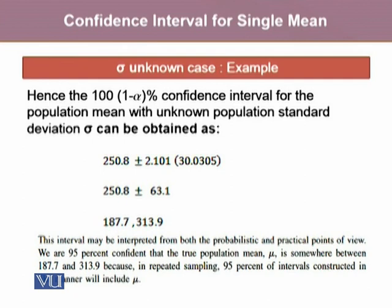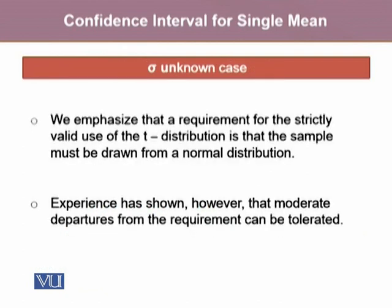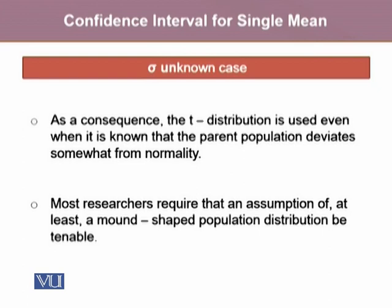The interval obtained is 187.7 to 313.9. This interval may be interpreted from both the probabilistic and practical point of view: we are 95% confident that the true population mean mu is somewhere between 187.7 and 313.9. In repeated sampling, 95% of intervals constructed in a like manner will include the population mean. A requirement for the strictly valid use of the t distribution is that the sample must be drawn from a normal distribution; however, moderate departures from this requirement can be tolerated, and most researchers require that an assumption of at least a mound-shaped population distribution be tenable.